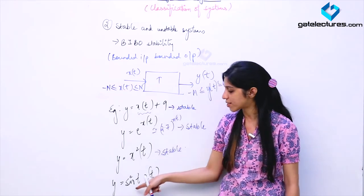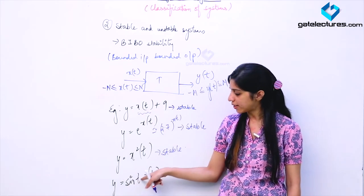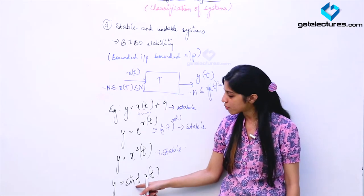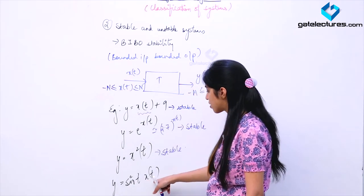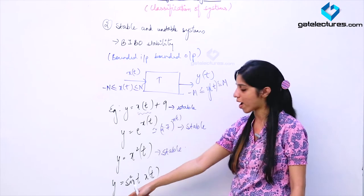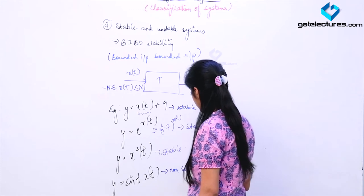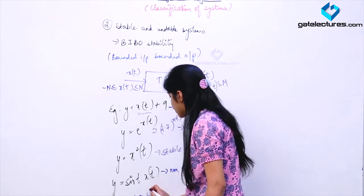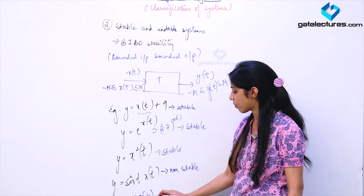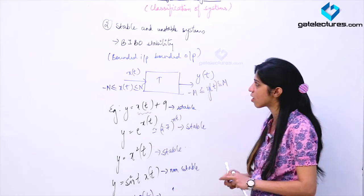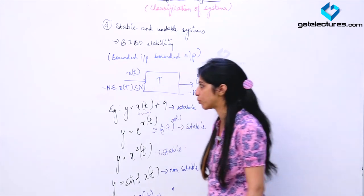Now look at this one — we are multiplying X(T) with sin(T). When you are multiplying with sin(T), this is going to continue. Although its value lies between minus 1 and 1 only, sin(T) is going to continue till infinity — this makes the signal unbounded. Y is going to become unbounded, so this is going to be a non-stable system. Similarly, another example: T into X(T). Here even if X(T) is bounded, multiplying with T is going to make it unbounded, so this is also going to be a non-stable system. This is how you define stability of a system using the criteria of BIBO stability — Bounded Input, Bounded Output.